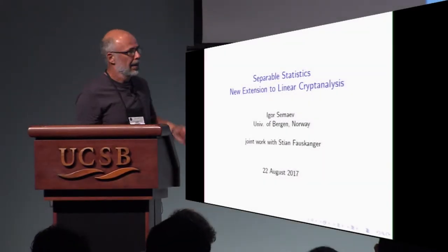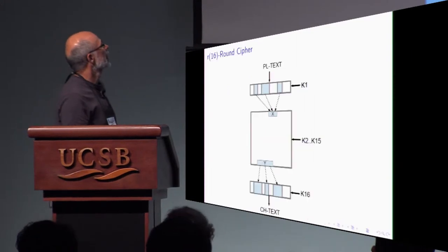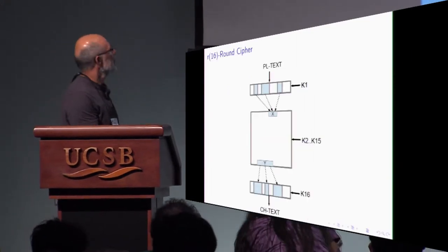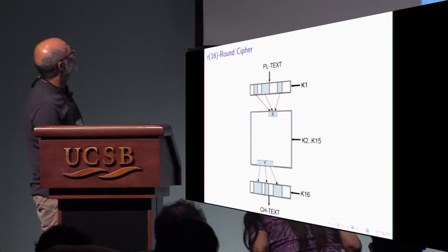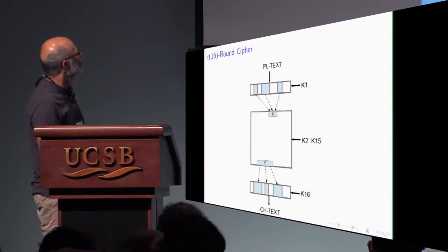So this is joint work with PhD student Steven Foskanger. On this slide you see a block cipher. This is plain text to the first round of block ciphers, those are internal rounds.